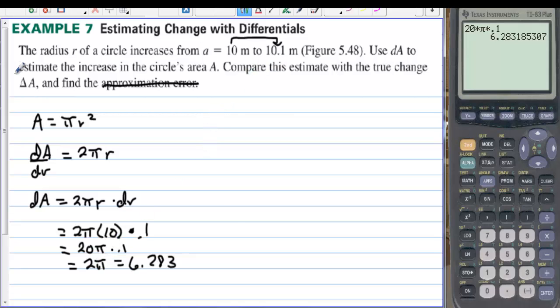Then it says compare this estimate with the true change. So we have area equals pi times 10 squared. And we'll subtract the two when we take pi times 10.1 squared. And we'll see what the true change is. So let's take 10.1 squared times pi.